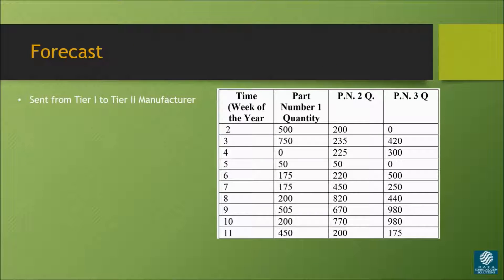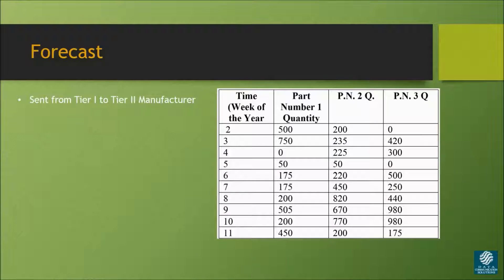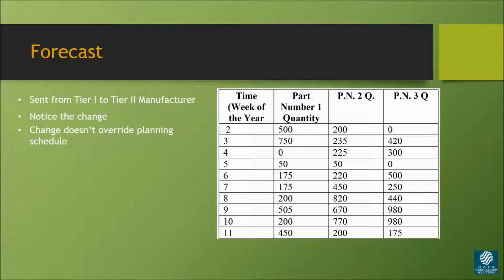A week later, the Tier 1 manufacturer sends this forecast to the Tier 2 manufacturer. If you look closely and compare it with the initial planning schedule, you'll notice that there has been a change. The third column of Week 8 has gone from 410 parts to 440. Will this change override the initial planning schedule? The answer is no. The company being affected needs to internally decide if this change is feasible and acceptable for them.